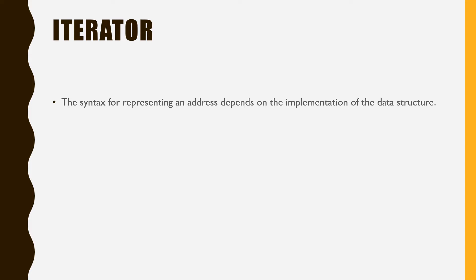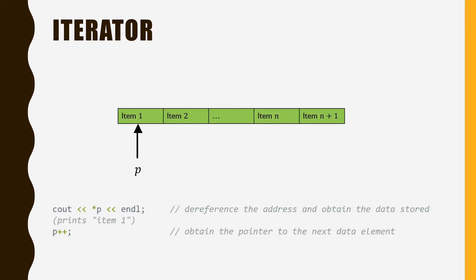However, the way we represent addresses of the data elements may differ for different data structures in C++. Assume that we are dealing with the array data structure. We use pointers to specify the addresses of the data elements stored in the array. We can use star p to represent the data content stored at address p. For example, using the first line of the code shown here, we can print the information of item 1. We can also use p++ to move the pointer to the next data element. In short, these are the syntaxes we use to access the data elements and move forward the pointer.